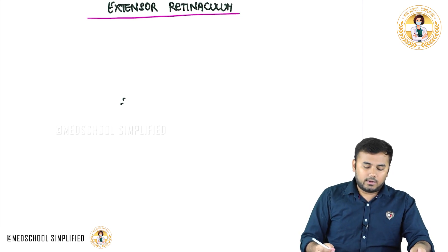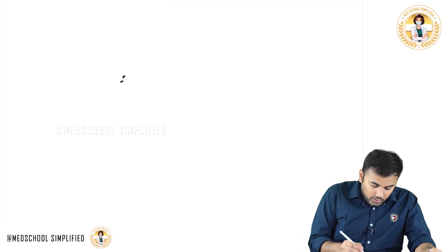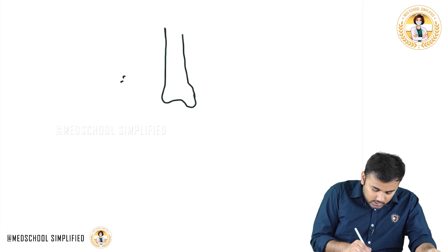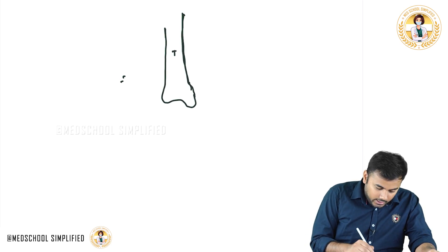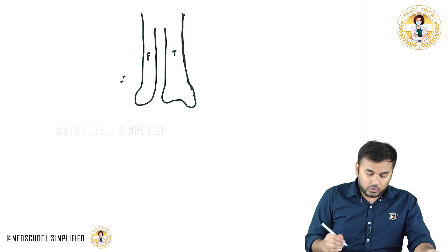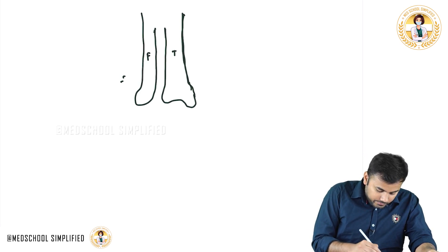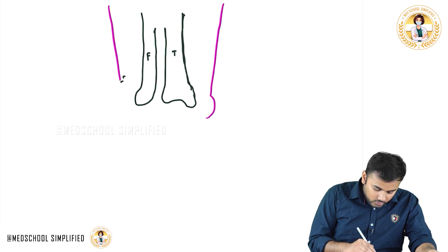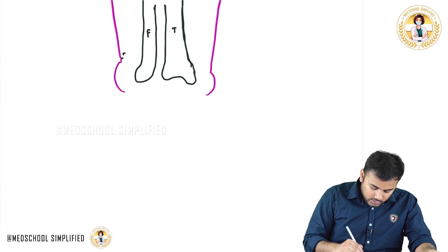First of all let me draw the bone here. This bone which you see here is your tibia bone. After that here you have got your fibula bone. This is your fibula bone. This is the leg, this is the medial malleolus, and this is the lateral malleolus.